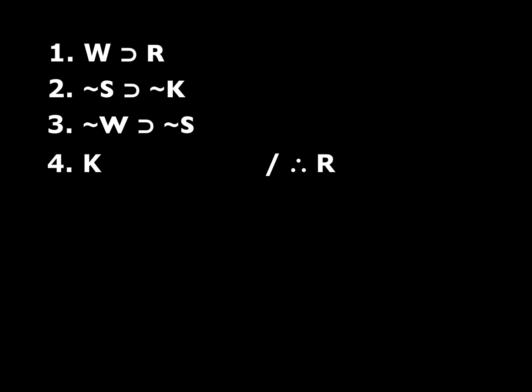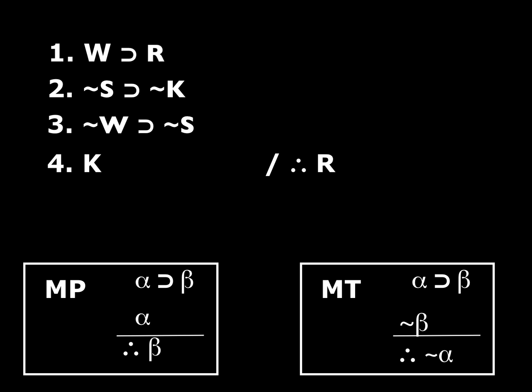Let's work some examples. Here we have an argument with four premises; the conclusion is R. I'm going to put our two conditional rules down here. Why didn't I also put DS and DI down here? Well, I can just look and see there's no way I can use DS because there are no disjunctions here — DS requires a disjunction and the negation of one disjunct. Could I use DI? Sure — I could use DI on any of these, because the only thing you need for DI is a statement. But it turns out that's not going to be useful right away.